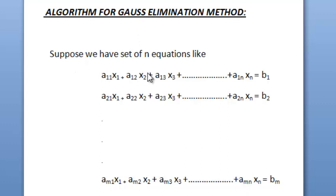Suppose we have set of N equations like A11x1 plus A12x2 plus A13x3 and so on up to A1nxn equals to B1 and the next equation is A21x1 plus A22x2 plus A23x3 plus and so on up to A2nxn equals to B2 and we have N equations like this.